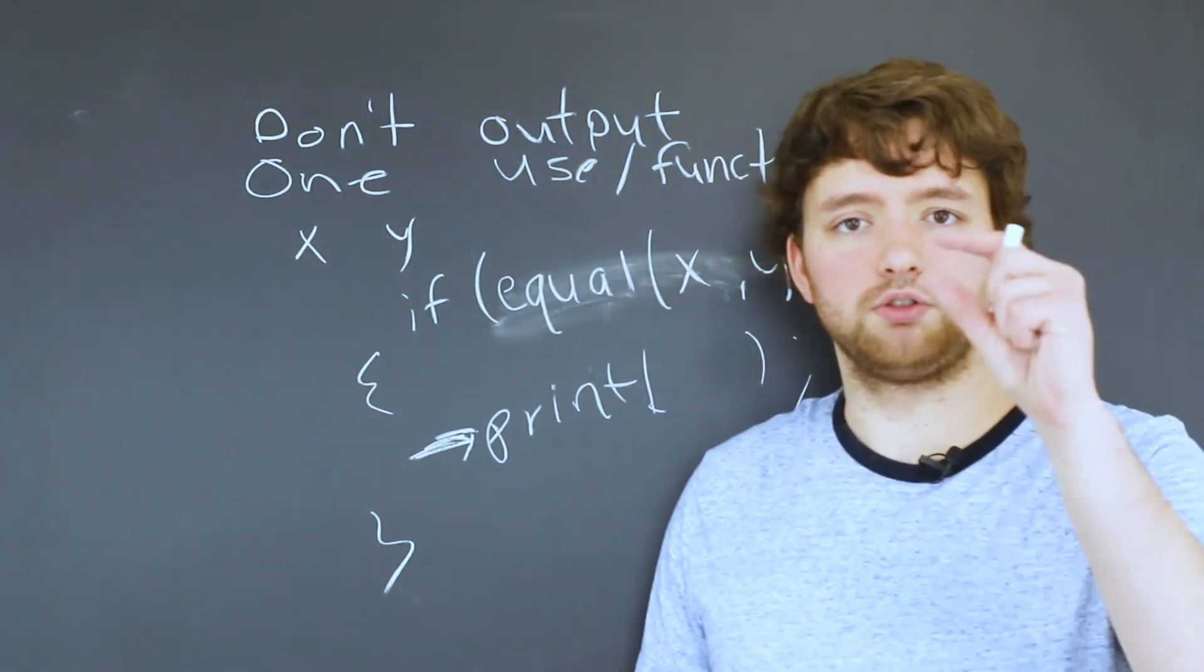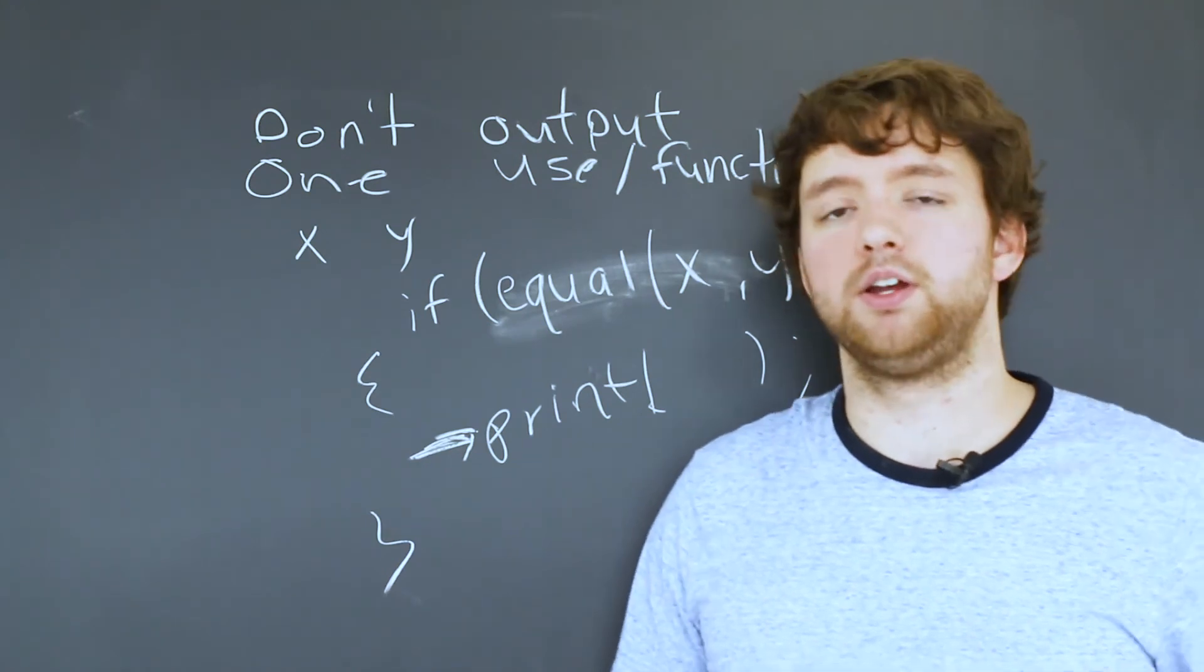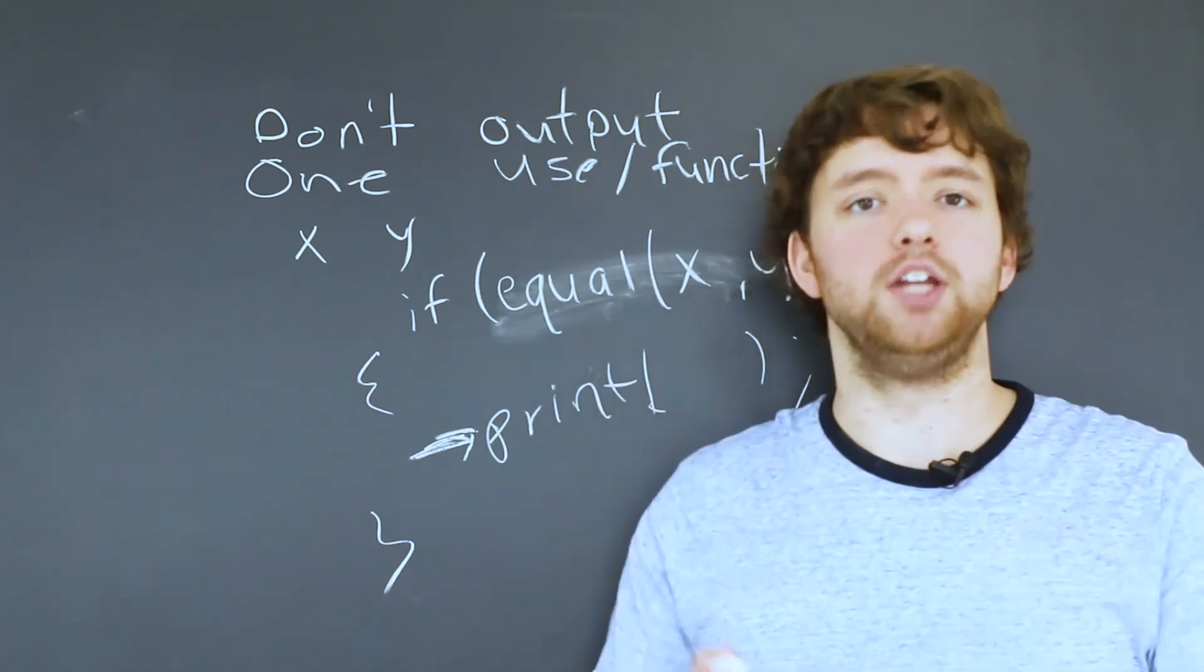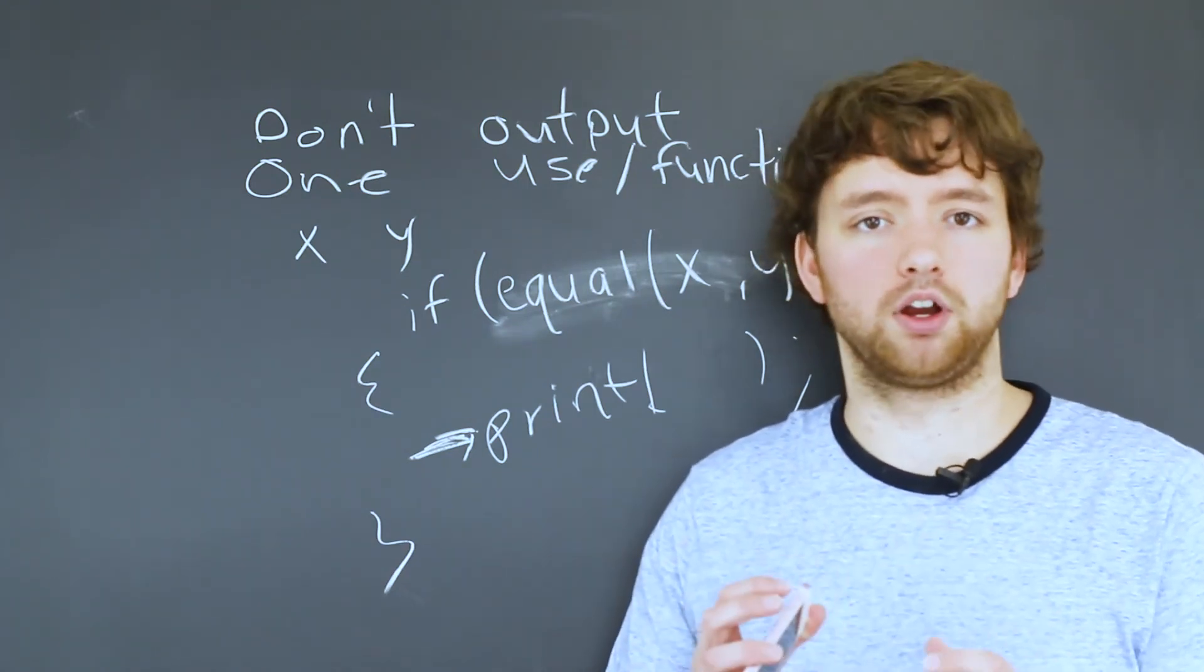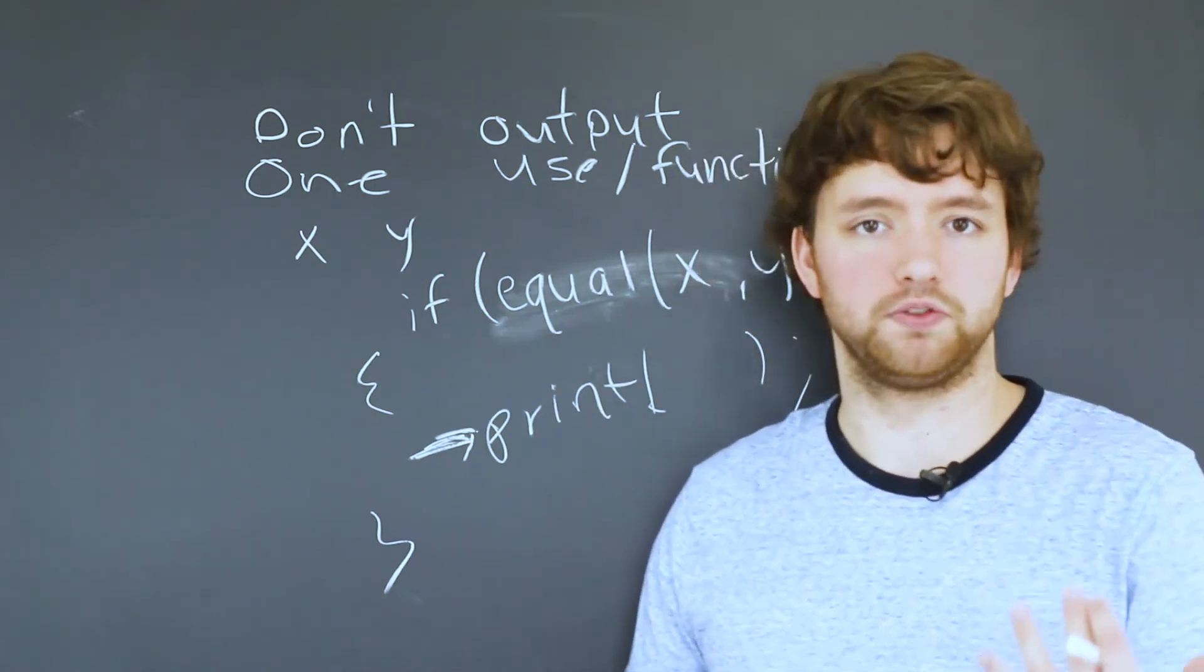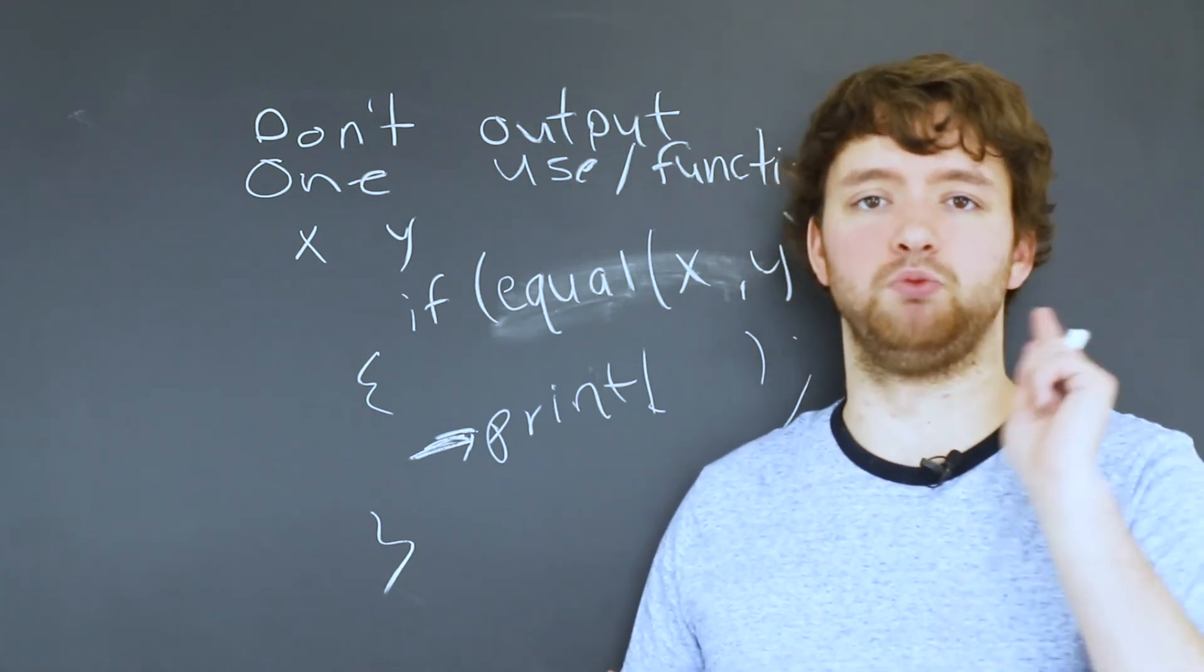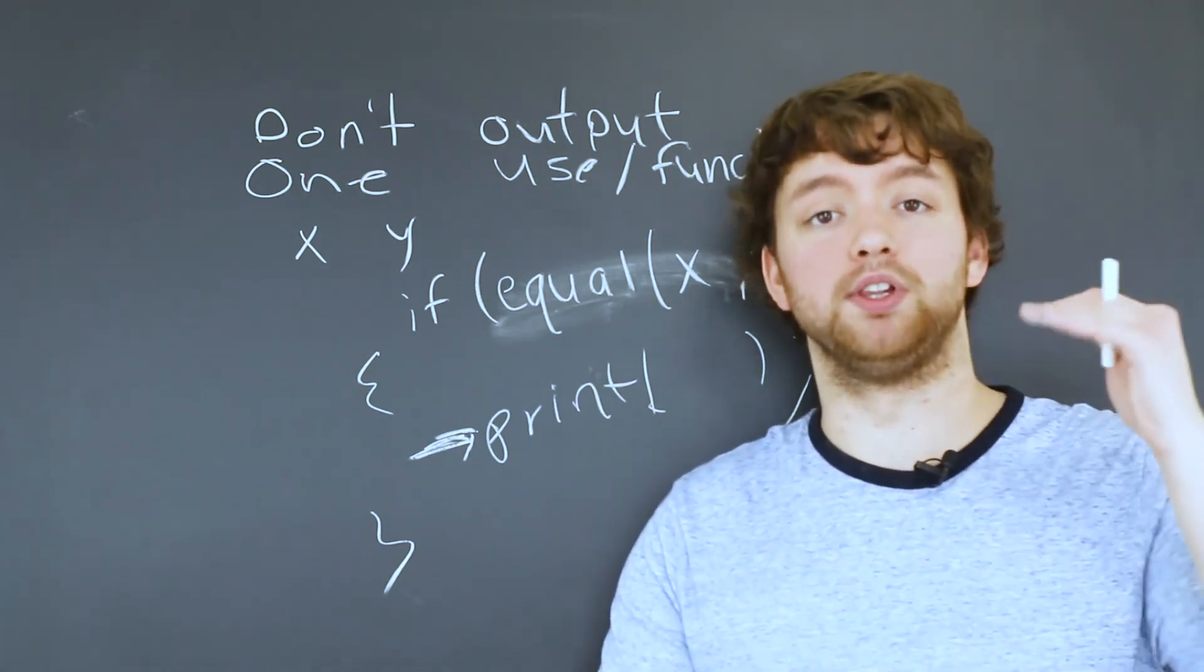If you just have some huge lego that does everything and you want to build something a little smaller or a little bit more specific, that's not going to work. As your function becomes bigger, it becomes less useful. You want smaller, to-the-point functions that solve one task, and then you start to build up a library that allows you to do more complex things.